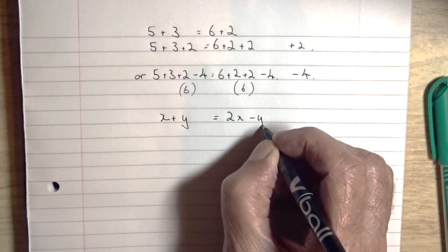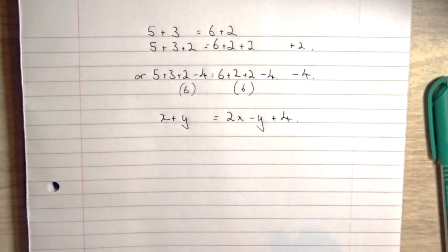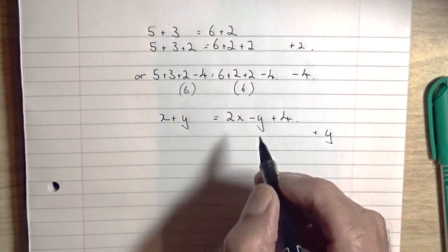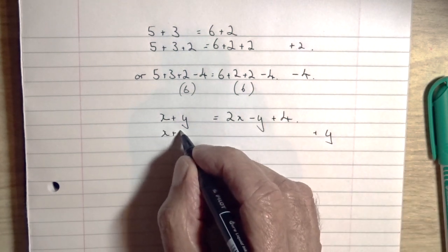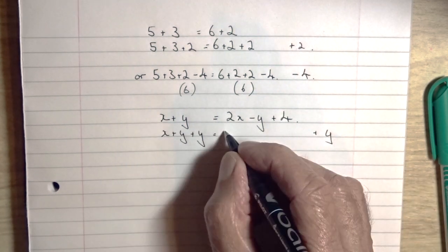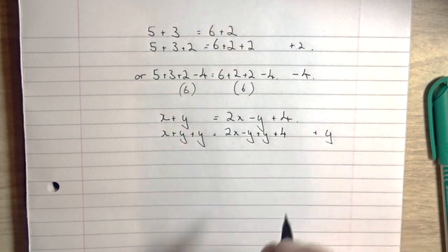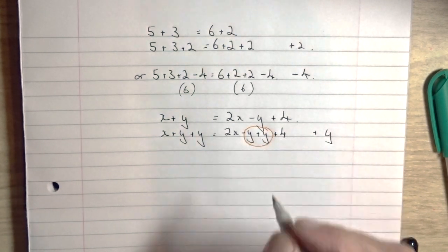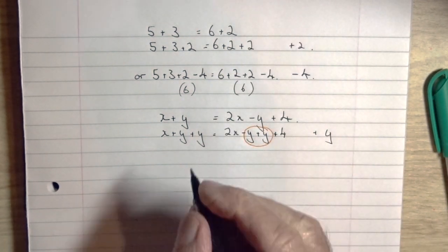Let's change now to an algebraic equation. x plus y equals 2x minus y plus 4. To try and get the y's on one side, I'm going to add a y to each side. So we've got x plus y plus y, and on the other side 2x minus y plus y. The minus y and the plus y will cancel out.